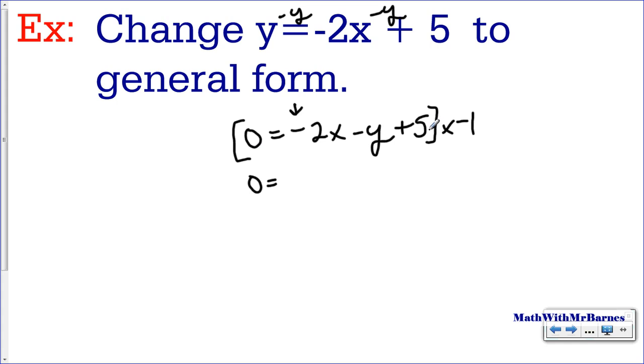So I can change the negative 2x to a positive 2, as long as I change everything: the negative y to a positive y and the positive 5 to a negative 5. Essentially, all I'm doing is multiplying each one of these things by negative 1.